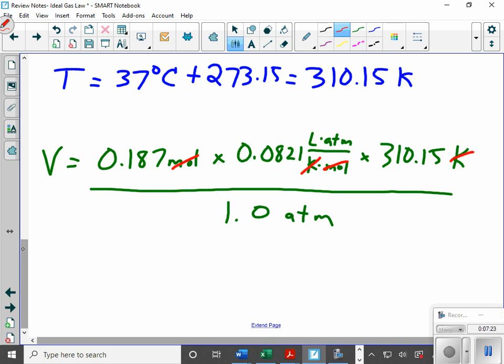Kelvin on top, Kelvin on bottom, atmosphere on top, atmosphere on bottom, leaves me with an L. Is an L a unit for volume? It is, so I'm on the right track. So when I did my math, I came up with 4.7616 liters.